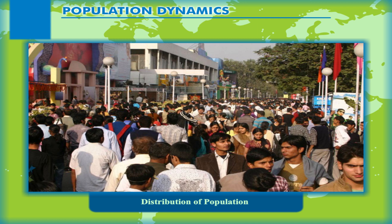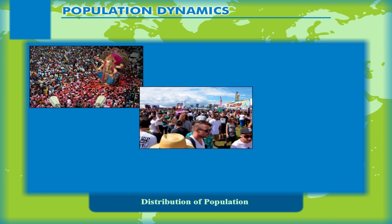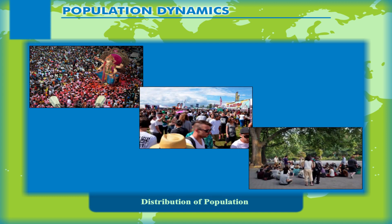In comparison to other continents, Asia has a high density of population. On the basis of density of population, there are three markedly different areas: areas of high density, moderate density and low density.